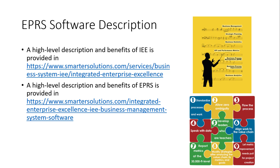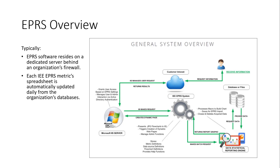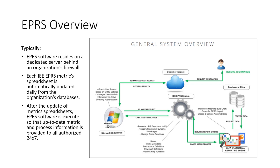A high-level description and benefits of EPRS is provided in the link shown. Typically, EPRS software resides on a dedicated server behind an organization's firewall. Each IEE EPRS metric spreadsheet is automatically updated daily from the organization's databases. After the update of metric spreadsheets, EPRS software is executed so that up-to-date metric and process information is provided to all authorized 24 by 7.